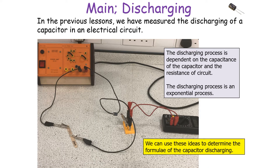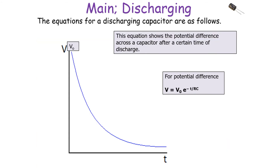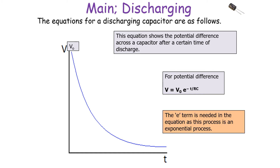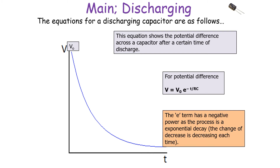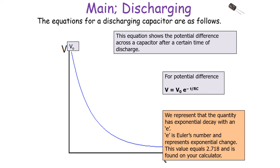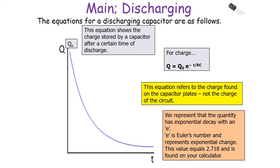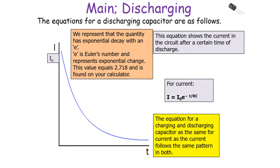We can use these ideas to determine the formulae for capacitor discharging. The equation for potential difference across the capacitor after a certain time of discharge is: V equals V0 times E to the power minus T over RC. The E term is needed as it's an exponential process — this is exponential decay as the change of decrease is decreasing each time. E is Euler's number representing exponential change. Similarly, for charge: Q equals Q0 times E to the power minus T over RC, referring to charge on the capacitor plates. For current: I equals I0 times E to the minus T over RC.